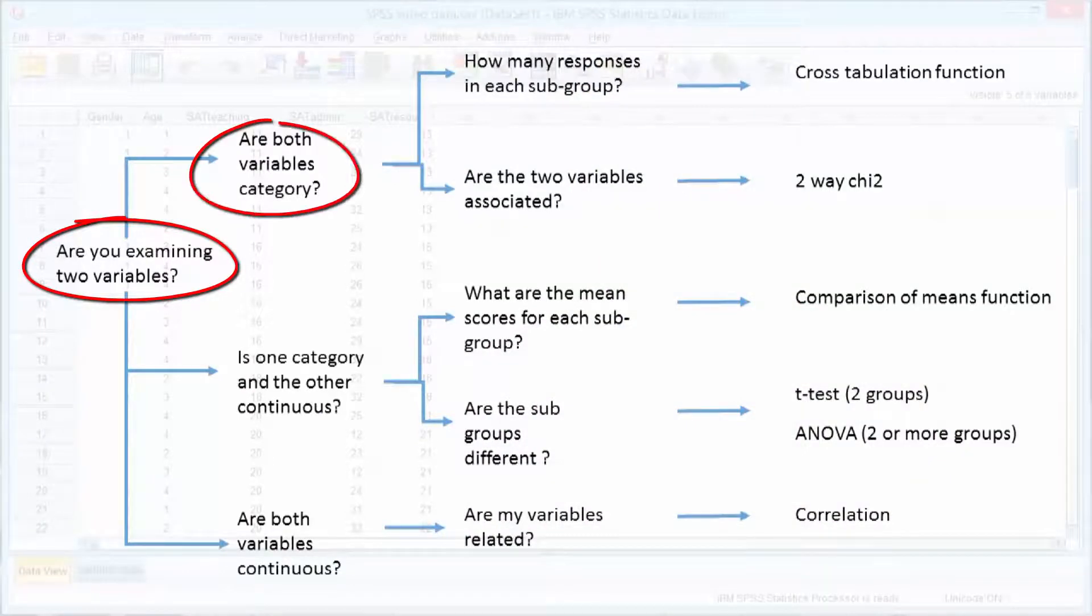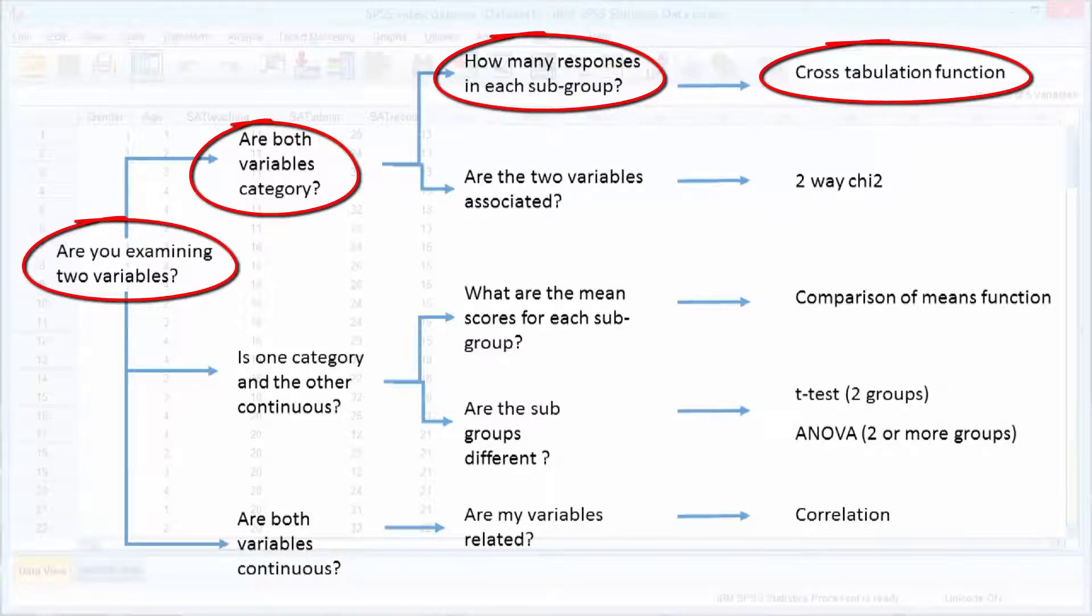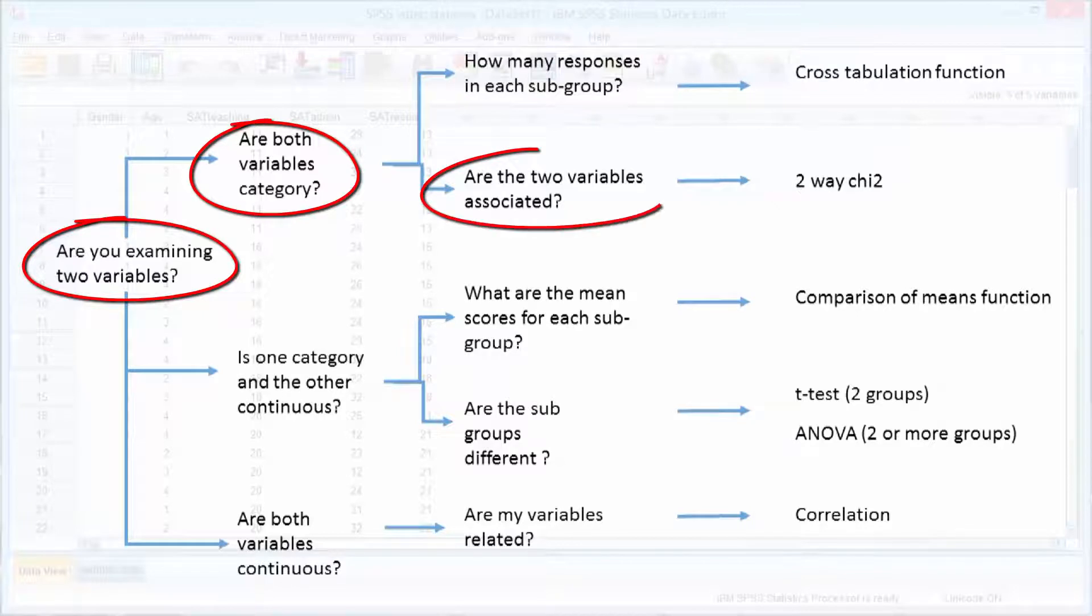If both questions are category type questions, then we use the cross-tabulation function of SPSS to describe the two variables. To see if this association is statistically significant, we undertake a two-way chi-squared analysis.